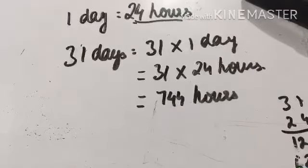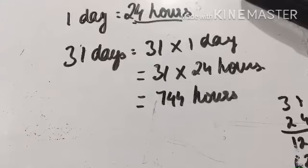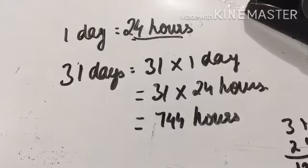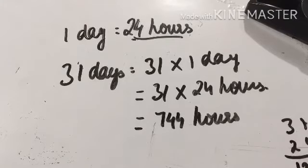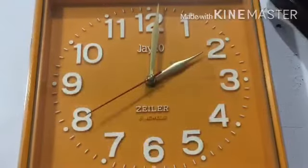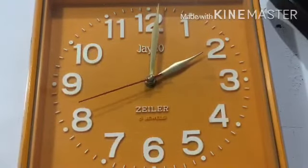So one month is equal to 744 hours. The conversion of days into hours is now done. I have left two questions for you to do on your own. Now we will do conversion of hours into minutes.